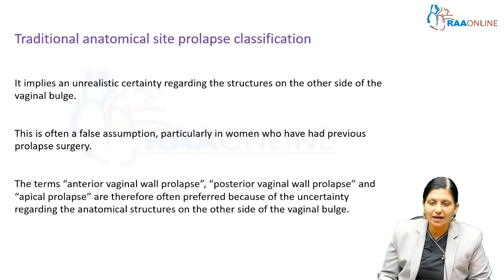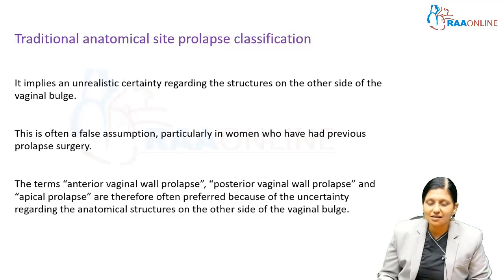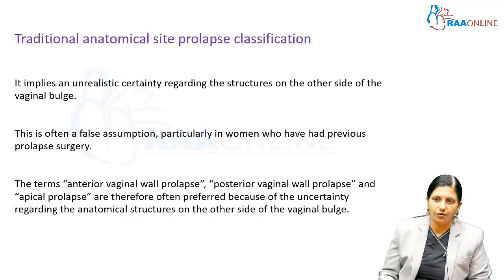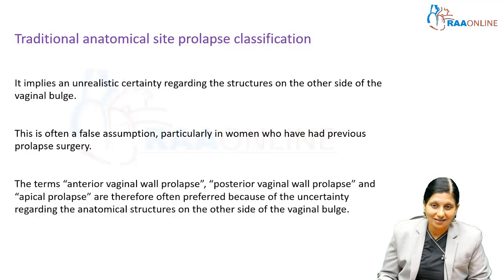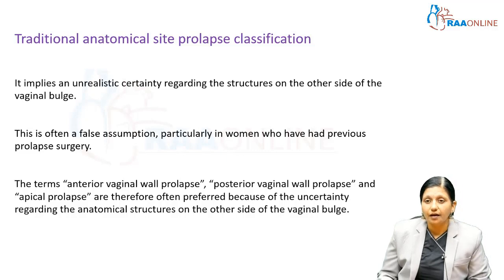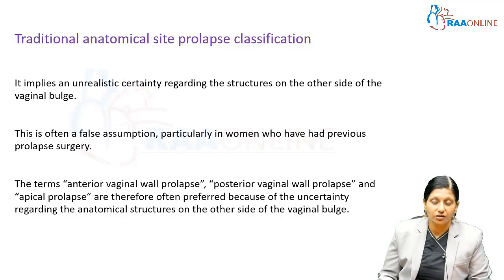The traditional anatomical site prolapse classification, also known as Shaw's classification, grades prolapse as: Grade 1 — above the introitus; Grade 2 — at the level of the introitus; Grade 3 — below the introitus; and Grade 4 — procidentia, when the fundus of the uterus lies outside the uterus.